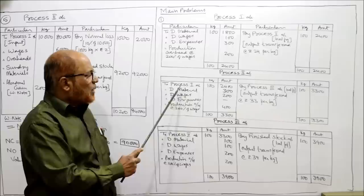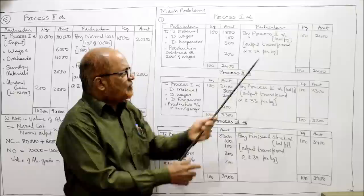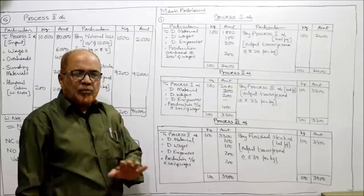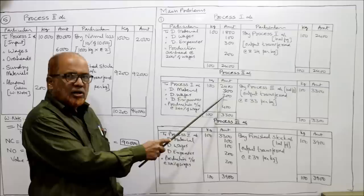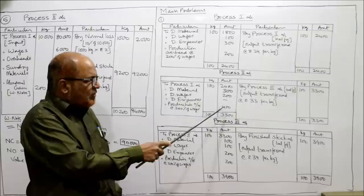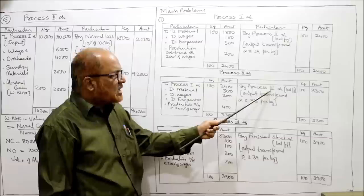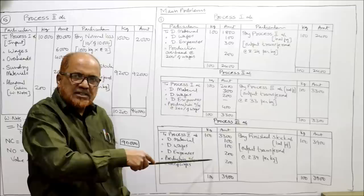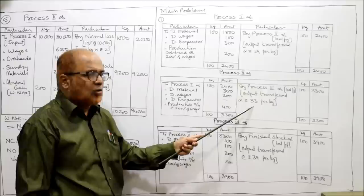Process 2 account — debit side: to Process 1 account 100 kg, 2,400 rupees (the output of Process 1 becomes input of Process 2); to direct material 300; to direct wages 200; no direct expenses in Process 2; to production overhead 200% of wages = 200% of 200 = 400 rupees. Total debit side = 3,300 rupees for 100 kg. Credit side: by Process 3 account balancing figure — output transferred at 3,300 / 100 = 33 rupees per kilogram.